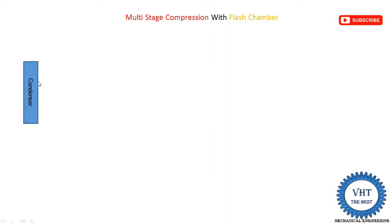Starting from the condenser: the superheated vapor refrigerant coming out from compressor two, also known as the high pressure compressor, enters the condenser. In the condenser the process four to five takes place — it is an isobaric heat rejection process. At point four the refrigerant is at high pressure in vapor state, and at point five it exits at high pressure in liquid state, because pressure does not change in the condenser.